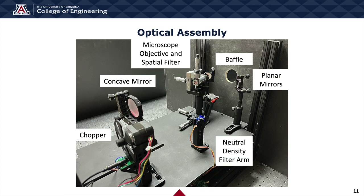Optical design has been integral to our scatterometer. Light from a HeNe laser shines through a chopper, a neutral density filter, two planar alignment mirrors, a microscope objective, a spatial filter, and a concave mirror. The beam then propagates through the sample plane and onto the detector. The goal of our optical system is to measure the scattered power from the sample at angles away from the sample's normal, in conjunction with classifying the sample's bidirectional scattering distribution function (BSDF).